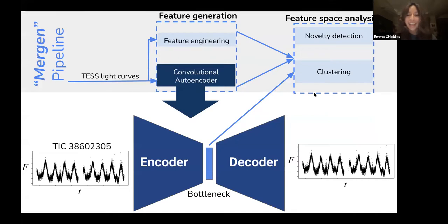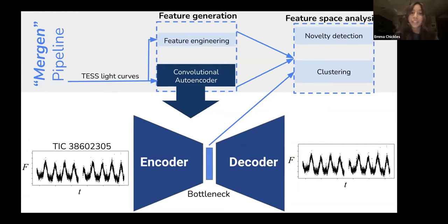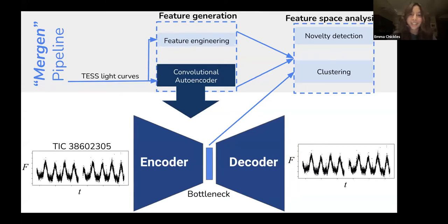Our pipeline MERGEN is made up of two parts. The first part is unsupervised feature generation from TESS light curves, and the second is unsupervised clustering on the generated feature space. We use a convolutional autoencoder — a neural network that reduces the dimensionality of our light curves. The encoder transforms input light curves into low-dimensional features in the bottleneck, and the decoder tries to reproduce the light curves from those bottleneck features. The autoencoder learns the features that best represent the light curves, and then a clustering algorithm finds clusters within the feature space.